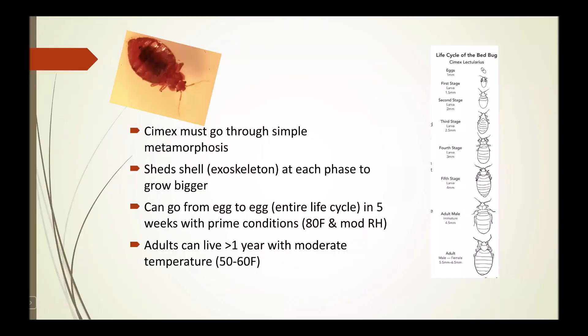They go through simple metamorphosis. Each stage — first, second, third, fourth, fifth — leads to the adult. What is imperative to remember is that they can go from egg to egg — egg hatching to laying an egg — in five weeks with prime conditions: about 80 degrees Fahrenheit and moderate relative humidity. Adults can live over a year with moderate temperatures, 50 to 60 degrees.